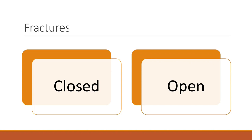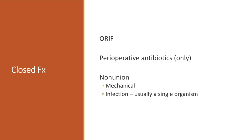Fractures can be closed or open. A closed fracture may require open reduction and internal fixation with rods, screws, or plates — and these have a very low infection rate. Those patients receive only perioperative antibiotics. You won't see the ones that healed fine — you'll see the ones that got infected, presenting as non-union or mal-union. As an infectious disease doctor, always rule out infection in cases of non-union or mal-union.